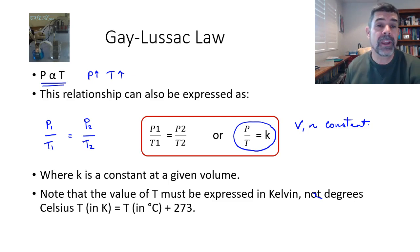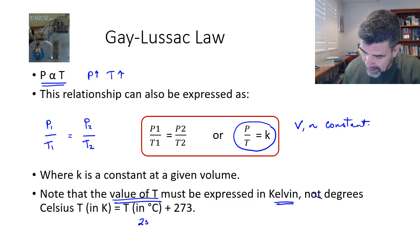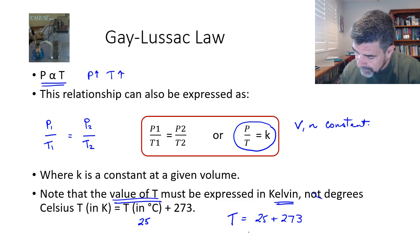One important thing about the Gay-Lussac law, as we have expressed it here, is that the value of temperature must be expressed in Kelvin, not in degrees Celsius. It's easy to convert these two. So for example, if we were talking about standard laboratory conditions, which is 25 degrees C, then the temperature in Kelvins would be 25 plus 273, which is 298 Kelvin.